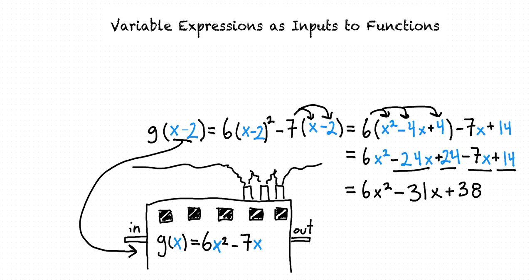This cannot be simplified any further, so that's our final answer. And we see when we plug x minus 2 into our function, our output is 6x squared minus 31x plus 38.